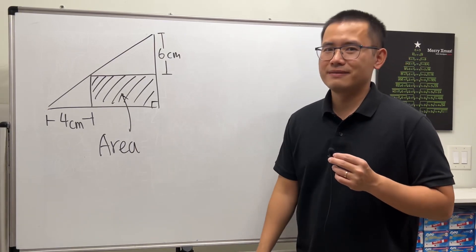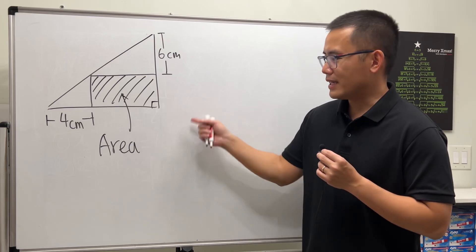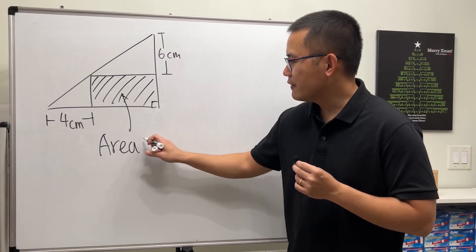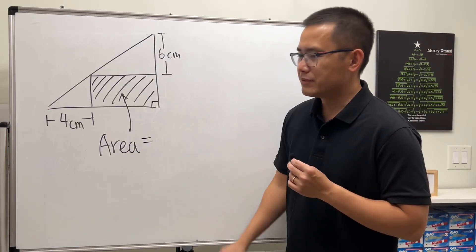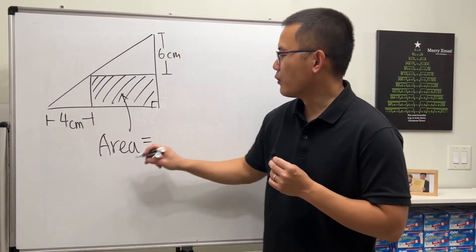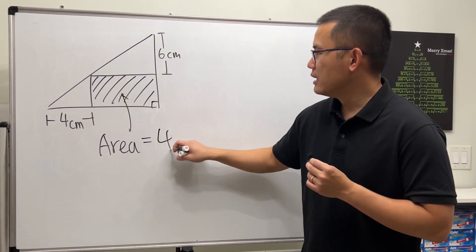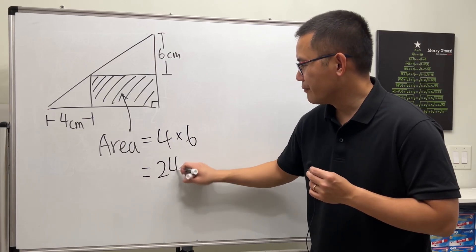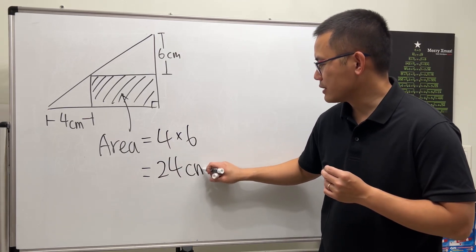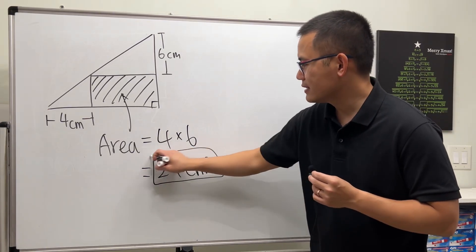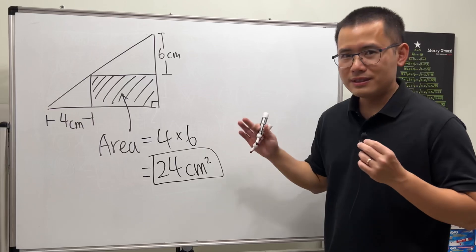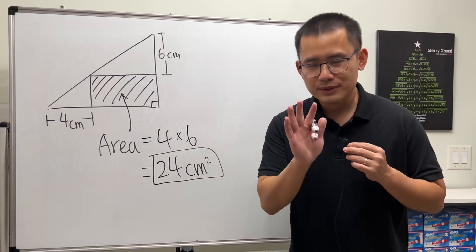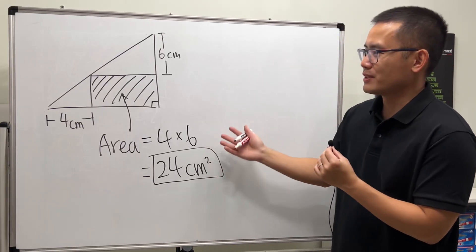All right, I'll tell you the answer. To find the area, all we have to do is multiply the 4 and the 6, and of course that's 24 centimeter squares. And then we are done. Okay, I know — don't go yet. Here is the explanation.